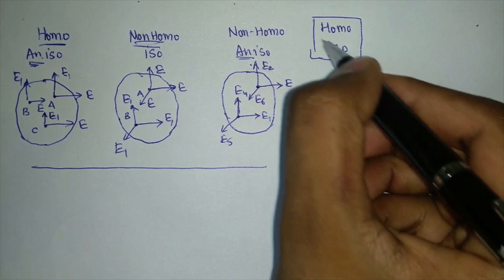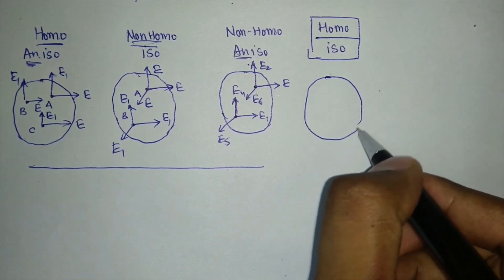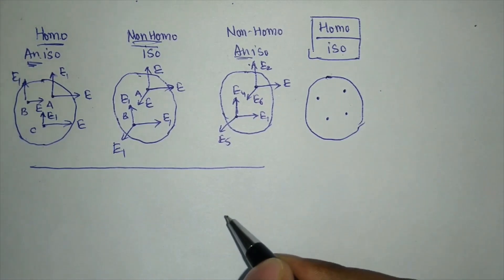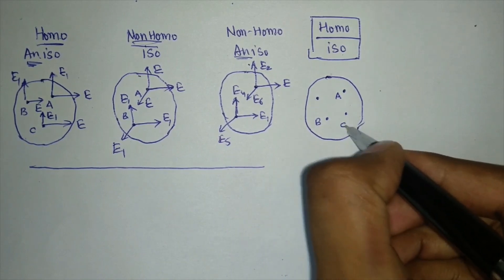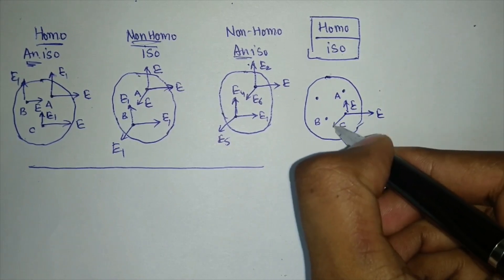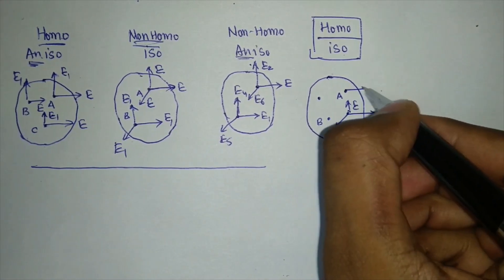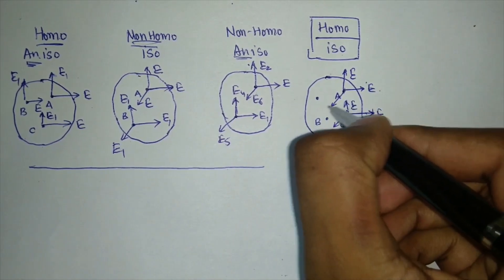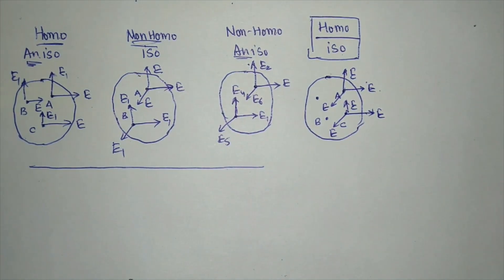The case we always consider in solid mechanics is that the material is both homogeneous and isotropic. This means at any location and in any direction, the value of the engineering property remains the same. If it is E at point A in one direction, it remains E in all other directions at A, and also E at points B and C in any direction. That is the basic concept behind homogeneous and isotropic material behavior.